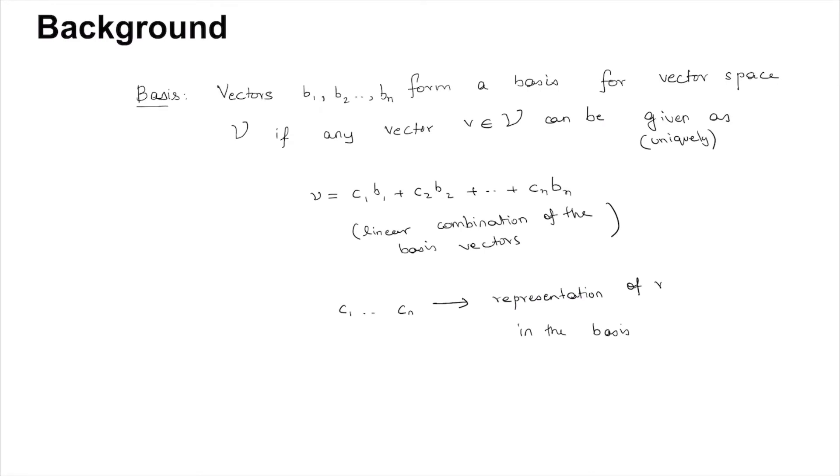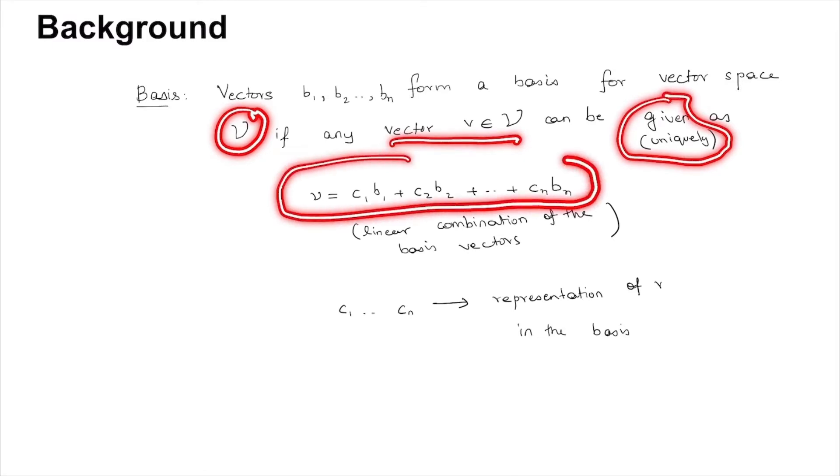Before we start, a little bit of background on what a basis is. Vectors b1 to bn form a basis of the vector space v if any vector in that space can be uniquely given as a linear combination of the basis vectors.